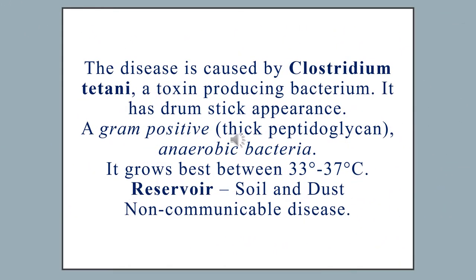Tetanus is caused by Clostridium tetani, which is a toxin-producing bacteria. It has a drumstick appearance. It is gram positive, meaning it has a thick peptidoglycan covering, and it is anaerobic — meaning it cannot grow in the presence of oxygen. It grows best between 33 to 37 degrees centigrade. Soil and dust are its best reservoir, and it is a non-communicable disease.